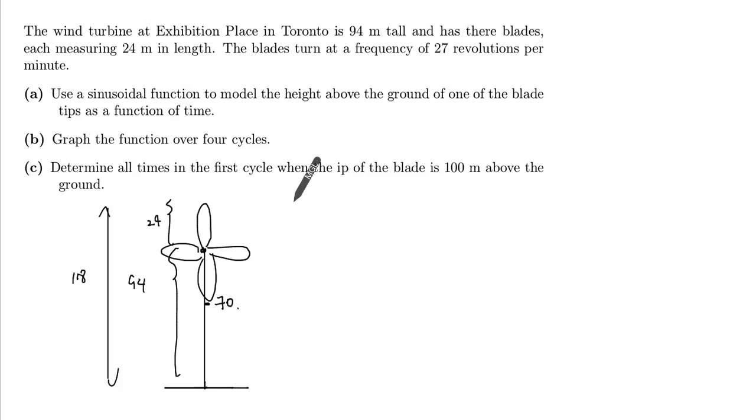So then the graph will look like this. Let's assume that we're starting from here and we're spinning up. So we can start from 94. We're going up, down.